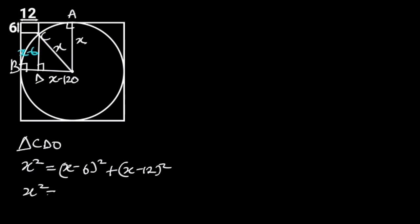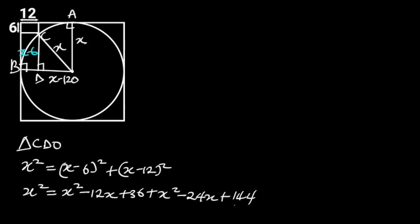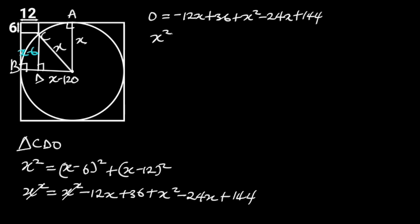Expanding: X squared equals X squared minus 12X plus 36, plus X squared minus 24X plus 144. X squared will cancel out, and we are left with 0 equals minus 12X plus 36 plus X squared minus 24X plus 144.